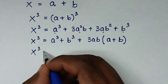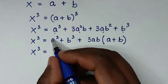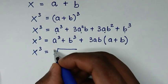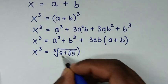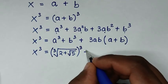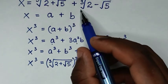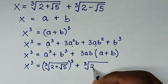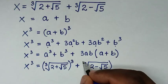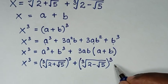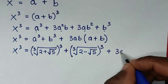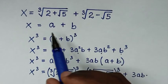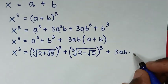Now a cubed: since a is cube root of 2 plus square root of 5, a cubed gives 2 plus square root of 5. And b cubed: since b is cube root of 2 minus square root of 5, b cubed gives 2 minus square root of 5. Then plus 3ab times (a plus b), and since a plus b equals x, we substitute x here.